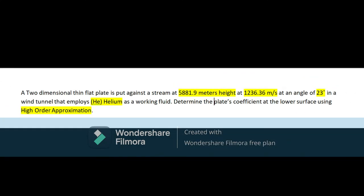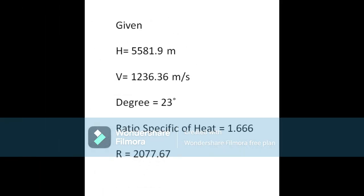As you can see, we have a given problem here. Our problem is: a two-dimensional thin flat plate is placed against a stream at 5,881.9 meters height at 1,236.36 meters per second at an angle of 23 degrees in a wind tunnel that employs helium as the working fluid. Determine the plate's pressure coefficient at the lower surface using high order approximation.